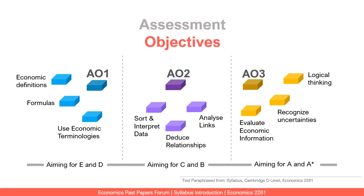If you are aiming for an E or D, focusing only on assessment objective one may suffice — but that is not the aim. If you only focus on understanding definitions, formulas, and terminologies and do not focus on analysis and evaluation, you cannot aim for a higher grade. In order to get a C or a B, you need to get your analysis part correct and understand the linkages between facts and data.